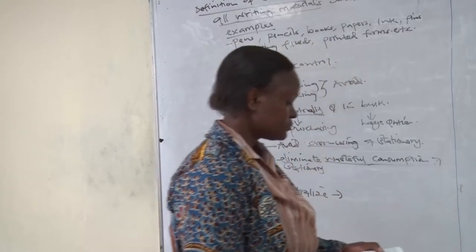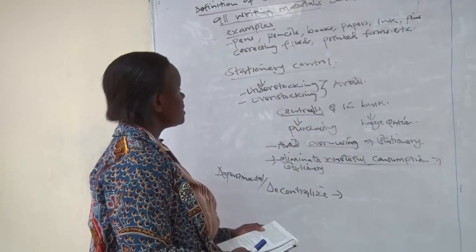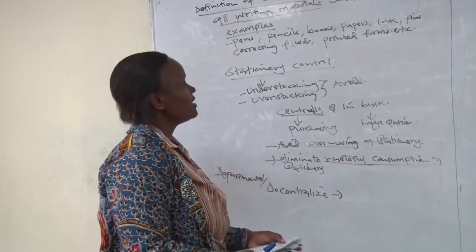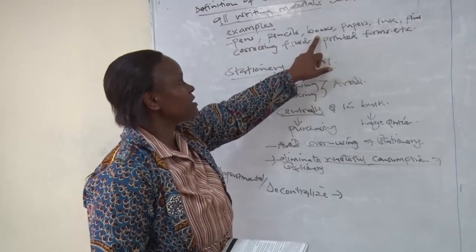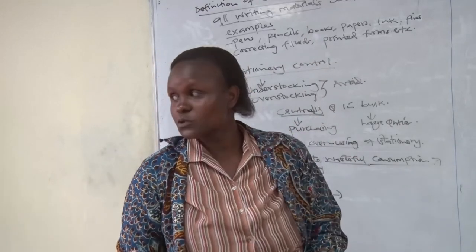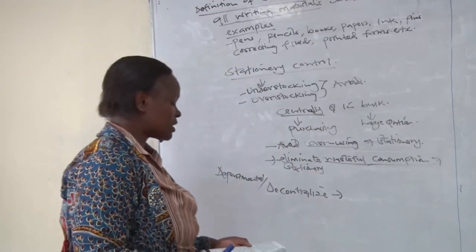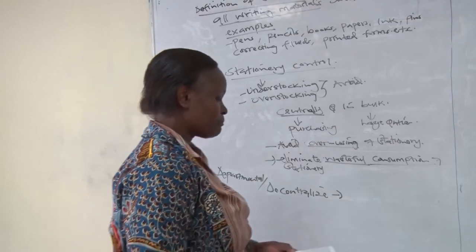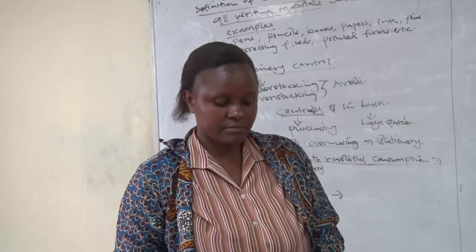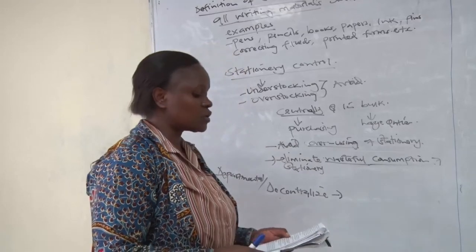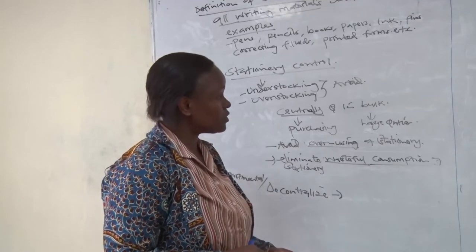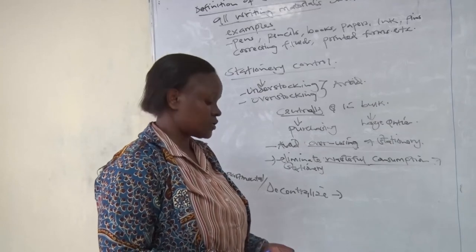Let us look at the control of consumption of stationery. There are many items of stationery which can be put to personal use — like books, for example. Those in the purchasing department could take books home. So for you to control stationery consumption properly, make sure the responsibility is assigned to a particular person, and that person must sign the requisitions before issuing the stationery.